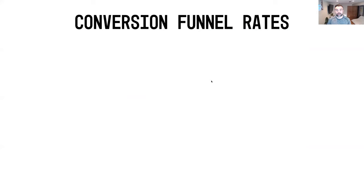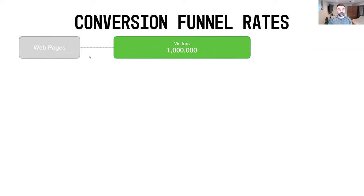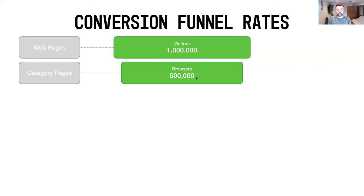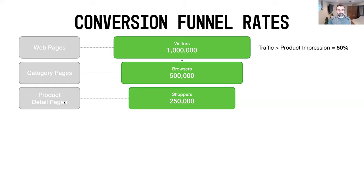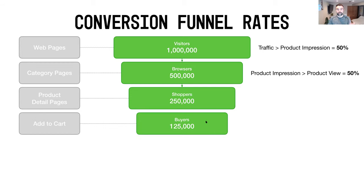You can calculate this conversion rate for your own site as well. If you started off with a million visitors over the last 12 months, you'd then look at all the people who were browsers — those who visited a category page. Taking total browsers over total visitors gives you your traffic-to-product-impression conversion rate. It may be 50% for you. Then you want those browsers to become shoppers — people who visited your product detail pages. Taking shoppers over browsers gives your product-impression-to-product-view conversion rate.